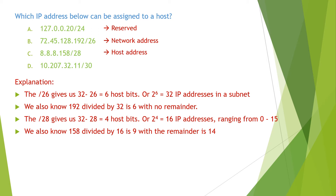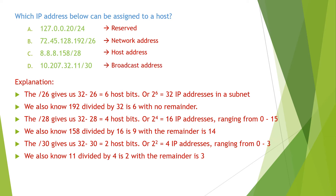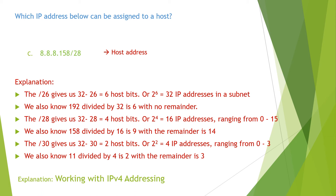So it is a host address. For the last address, the slash 30 gives us 2 host bits or 4 IP addresses ranging from 0 to 3. We also know 11 divided by 4 is 2 with a remainder of 3, so it is equal exactly to 3, making it a broadcast address. Therefore, the answer for this question is C. You can find the detailed explanation in the video Working with IPv4 Addressing.